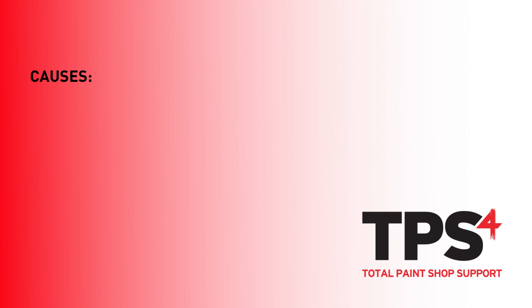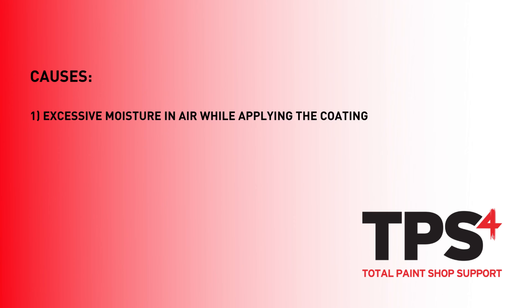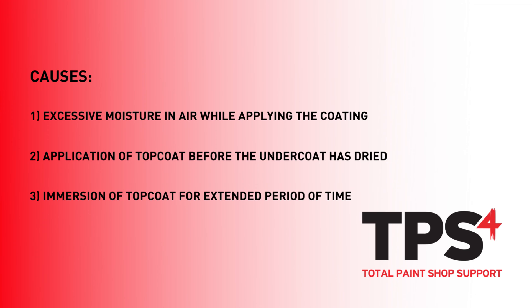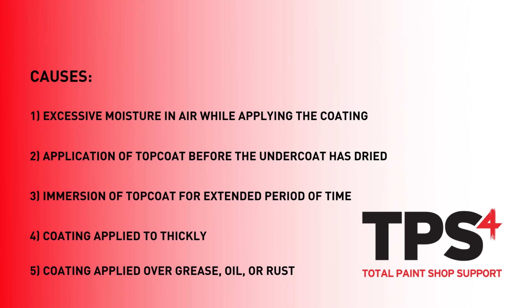Blisters are created for a number of reasons. They are often caused by applying the coating when there is excess moisture in the air, or when applying the top coat before the undercoats have dried thoroughly. They can also be created when the top coat has been immersed in water for extended periods of time, the coating was applied too thickly, or when it was painted over grease, oil or rust.